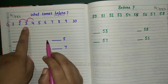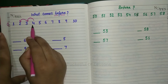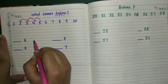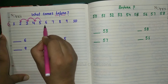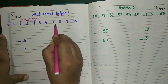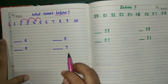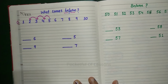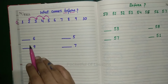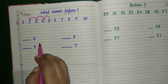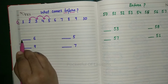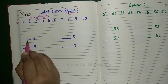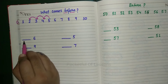So the number before 4 is on the left. Before 5, before 6, before 7, before 8. Let's say before. I hope you will understand this. Let's see with an example. Here is a dash — it means a blank. You have to tell the answer here.